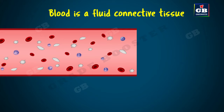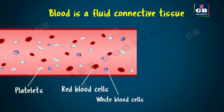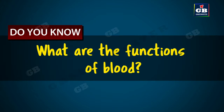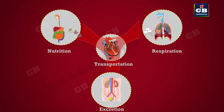First let us see about blood. Blood is a fluid connective tissue. Blood has different types of cells like RBC, WBC, and platelets. These cells are suspended in a fluid matrix called plasma. The plasma contains proteins, salts, and hormones. The functions of blood include transporting nutrients, gases, hormones, and waste materials between different parts of the body.